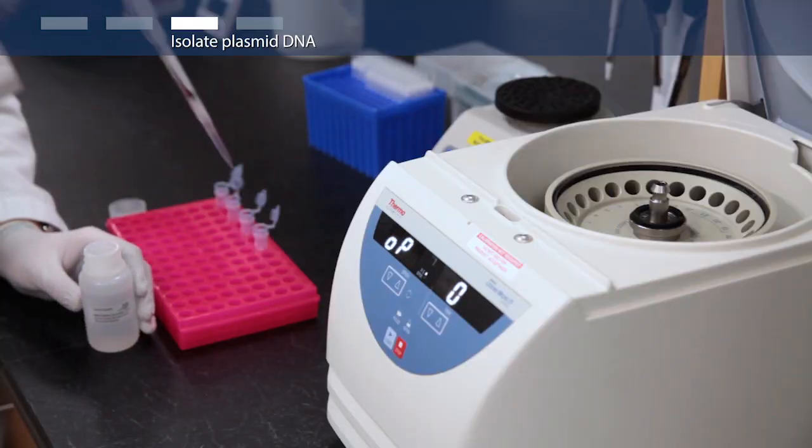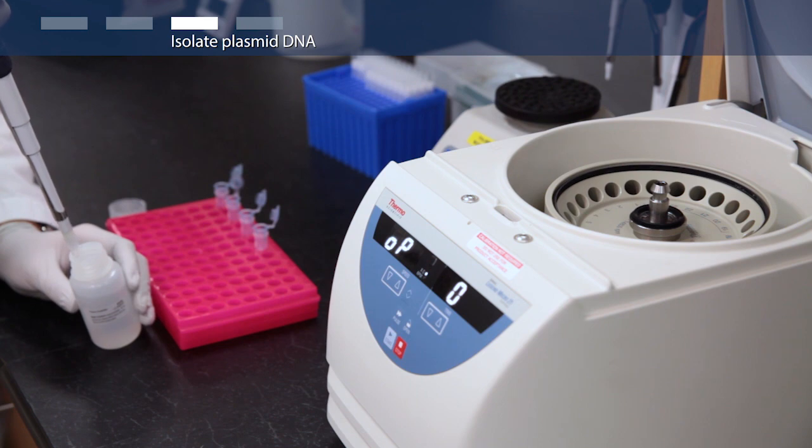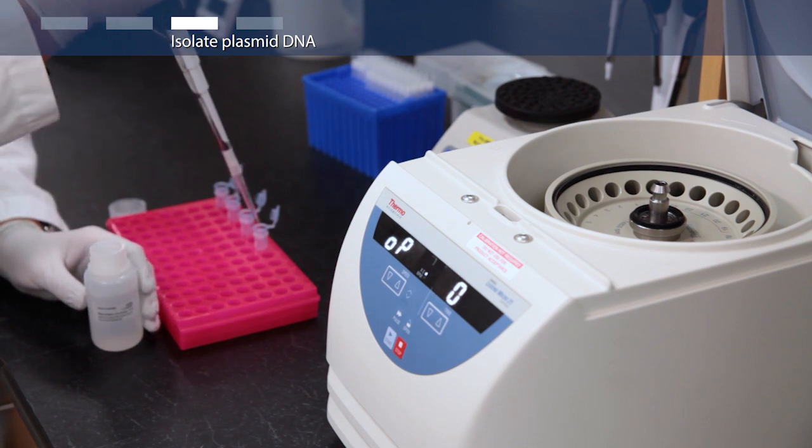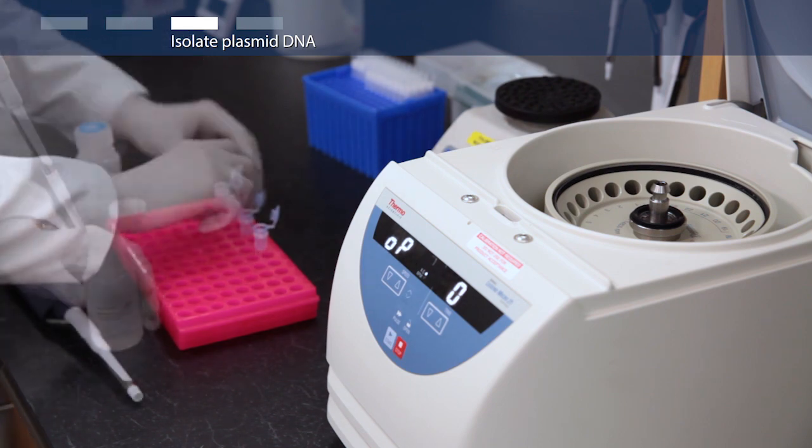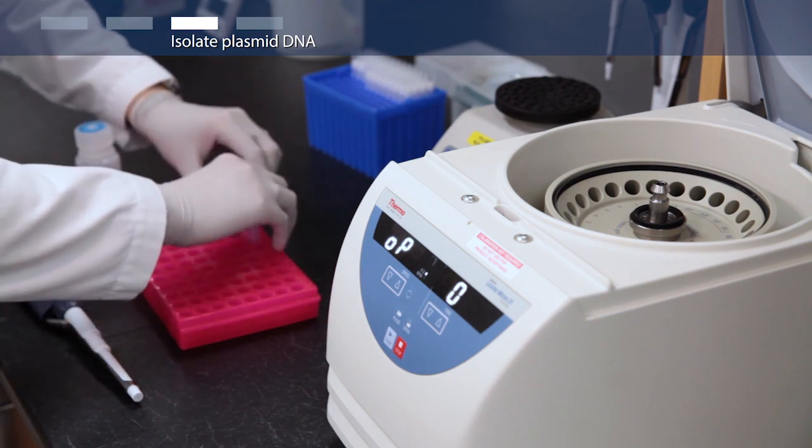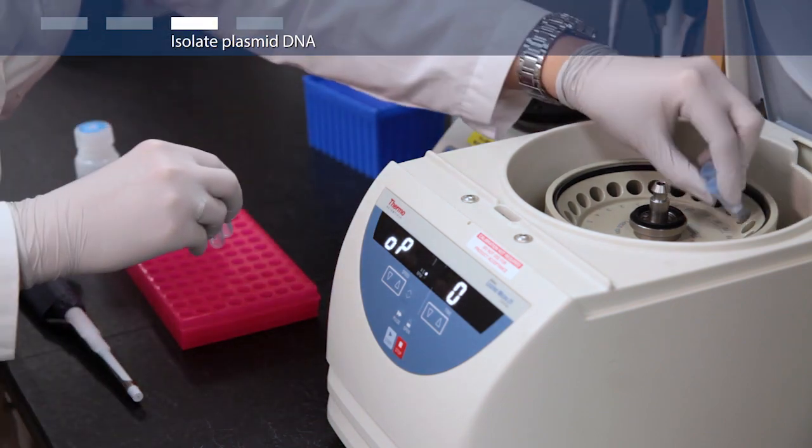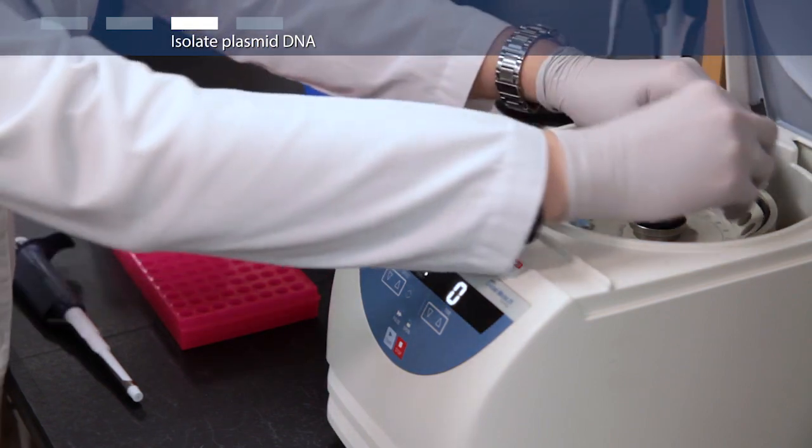Add 500 microliters of wash solution to the gene jet spin column. Centrifuge for 30 to 60 seconds and discard the flow-through. Place the column back into the same collection tube.